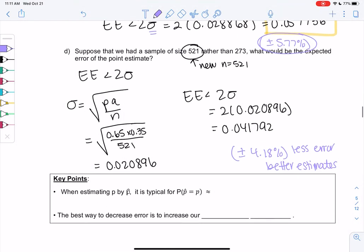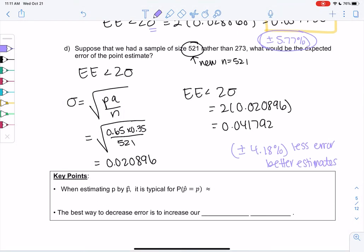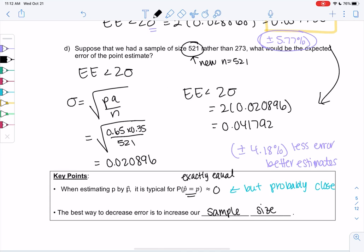So what are some key points from this section? When we're estimating p by p-hat, it's typical that they're exactly equal. The probability that p-hat equals p, the probability that they're exactly equal is pretty much 0. Squiggly lines mean about 0. But probably close. And the best way to decrease error is to increase our sample size. So we saw the error decrease from part c to part d as we increase sample size. So if we're getting too much error, it means we probably need a larger sample.